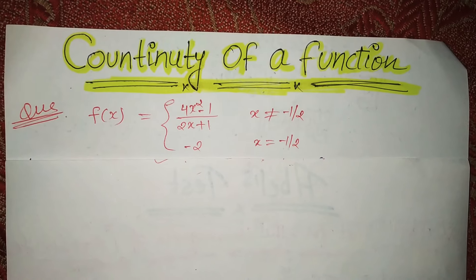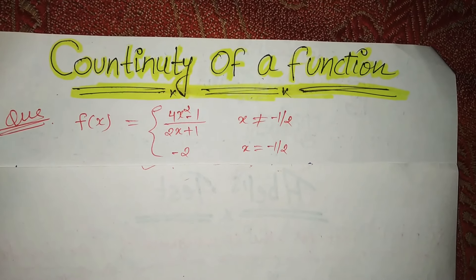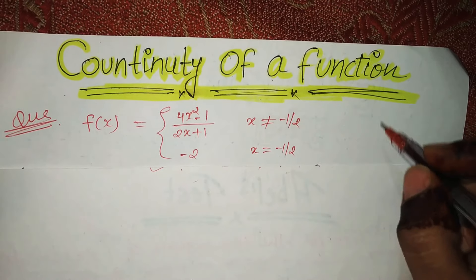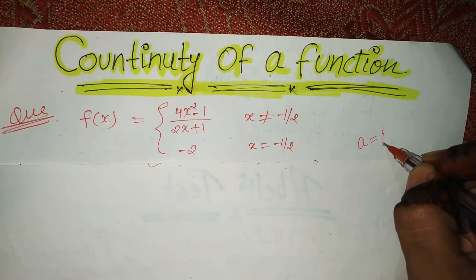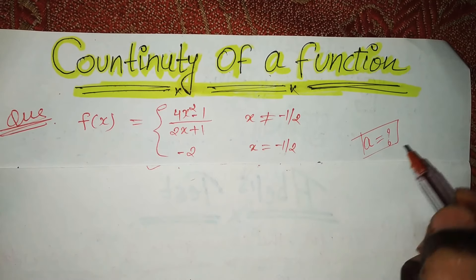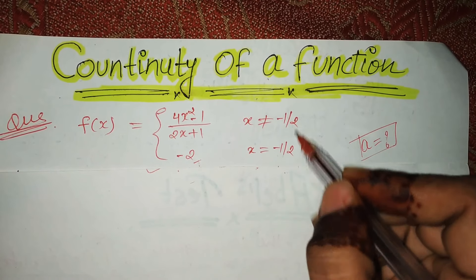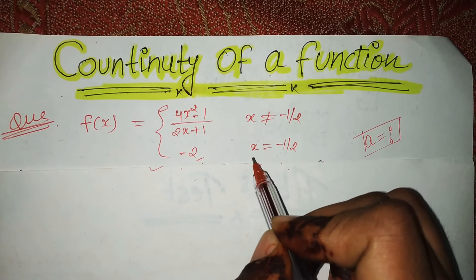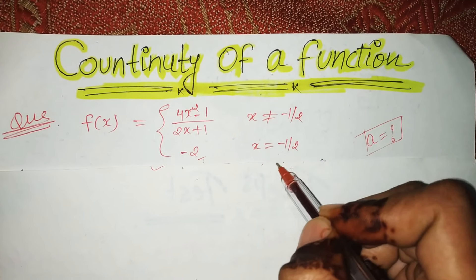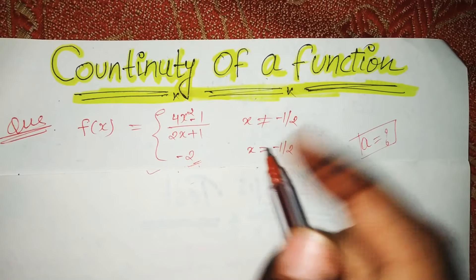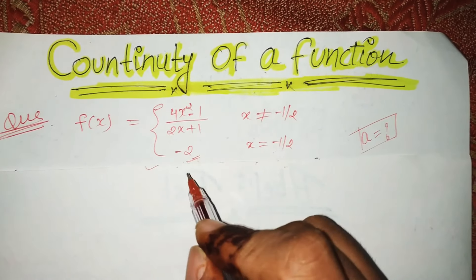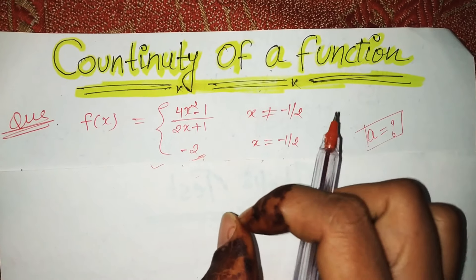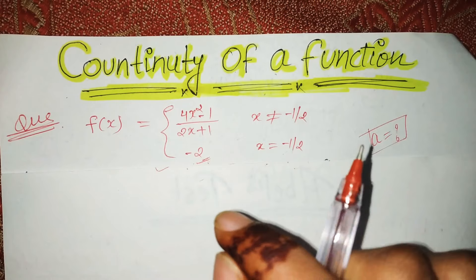As I told you in my previous class, you have got the value of A in your question. The concept was that you need the value of A, and that A value will be given to you in your question. Here, the value of A given is minus 2, and particular values of x are given: minus 1 by 2. So the condition is: if x equals minus 1 by 2, then the function value is minus 2. This is what has been found out — that's your A value.